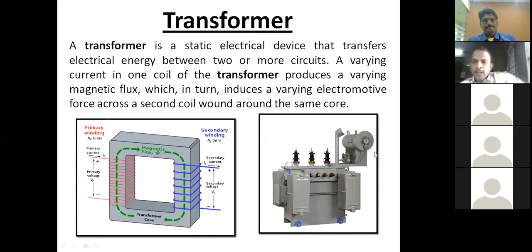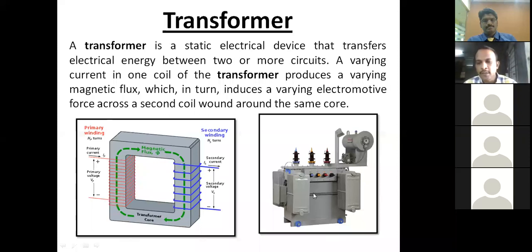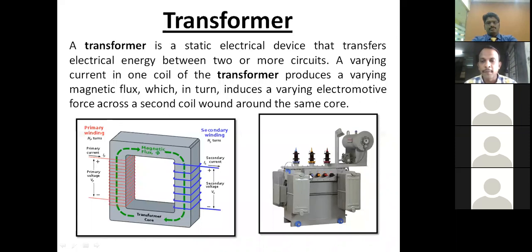This is the basic representation of a distribution transformer. The radiators dissipate heat because there is significant electrical energy change from one circuit to another. It has an oil tank and bushings where the input is given. This is a three-phase transformer stepped down, with four output wires in a star connection: R, Y, B, and N phases.